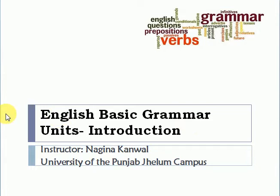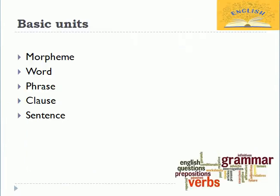Here we start. The basic units of English grammar are: morpheme — the smallest unit is the morpheme — and moving on there are bigger units like word, then phrases, clauses, and then the sentence.